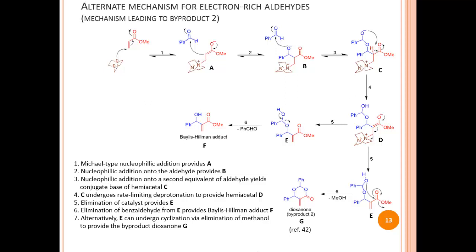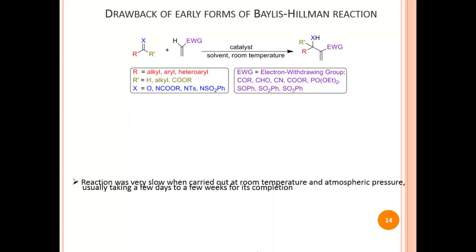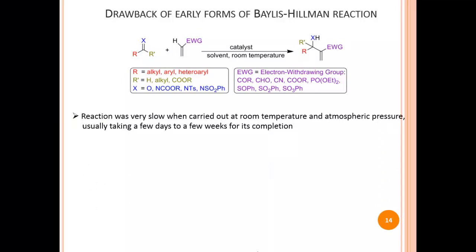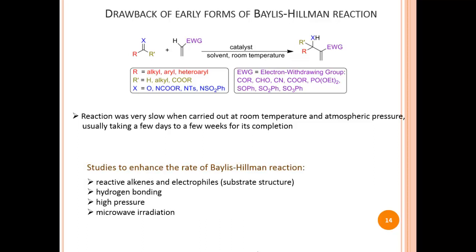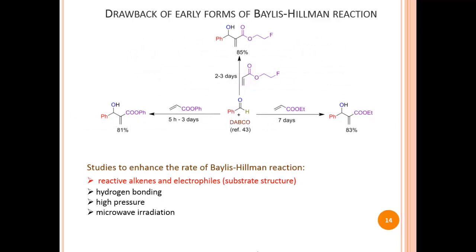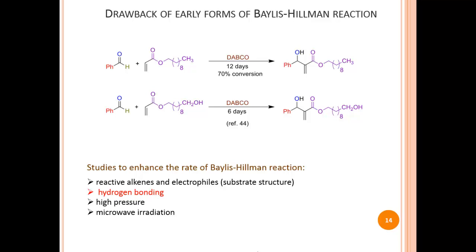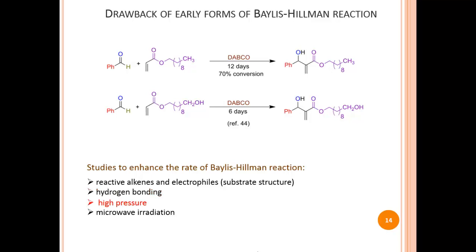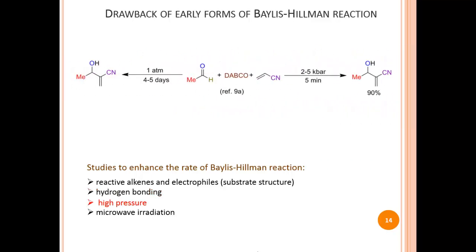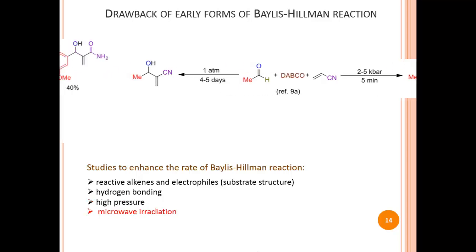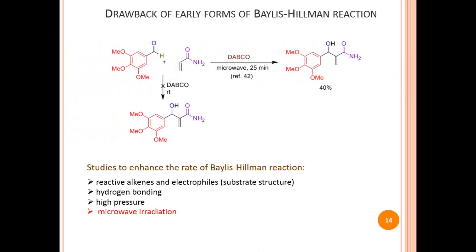Like many other reactions, the Bayliss-Hillman reaction has a drawback: the initial reaction was very slow at room temperature and atmospheric pressure, usually taking a few days to a few weeks for completion. Progress has been made in speeding up the process. Using activated alkenes and electrophiles allowed reactions to complete in a few days, and hydrogen bonding interactions between substrates have further reduced reaction time. Use of high pressure brought reaction time down from days to minutes — from 1 atm to 5 kilobar. Under microwave irradiation, a reaction that showed no progress at room temperature was completed in just 25 minutes.